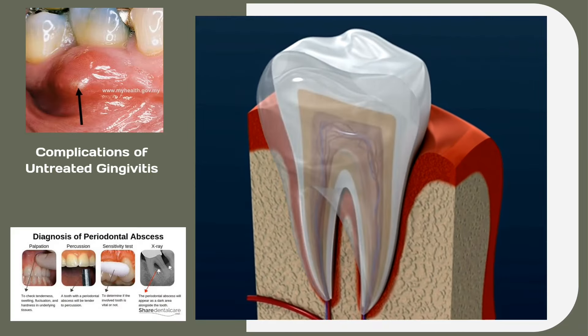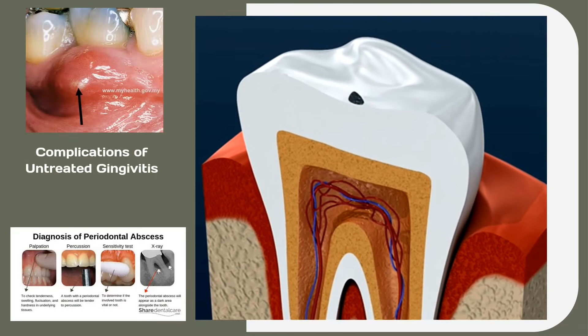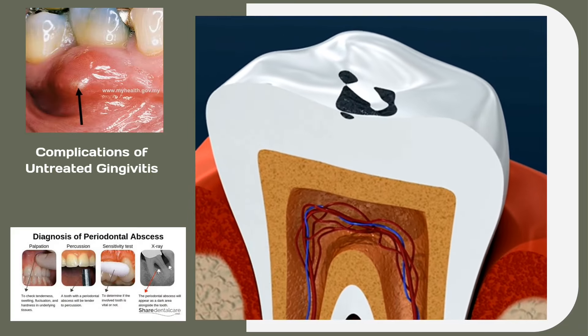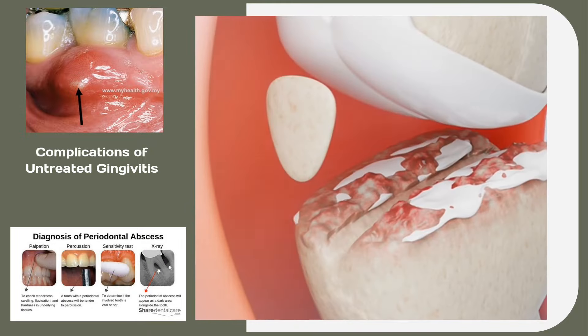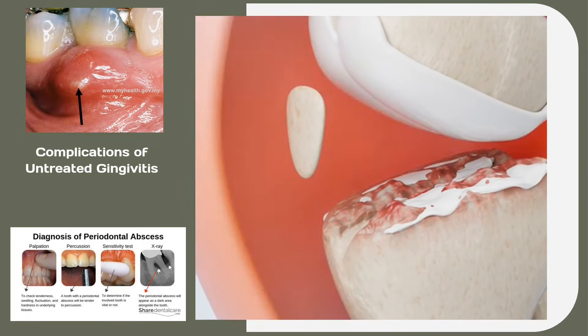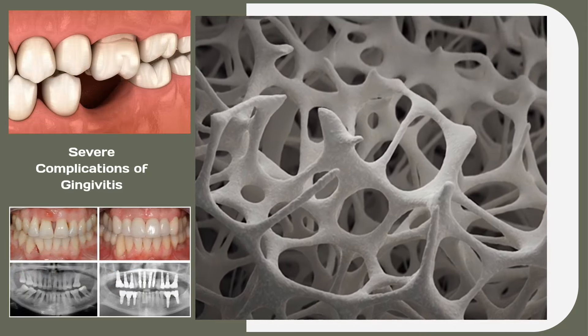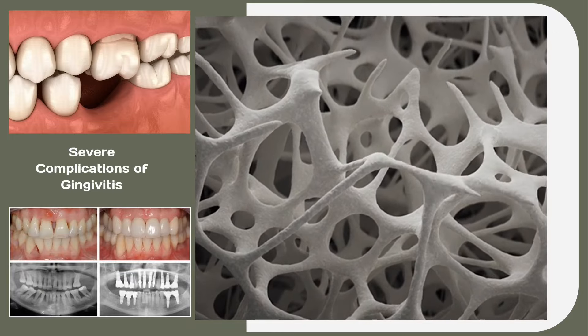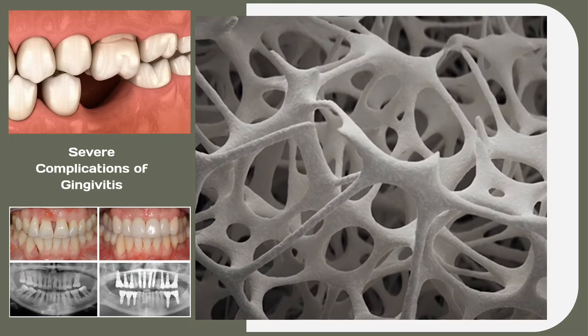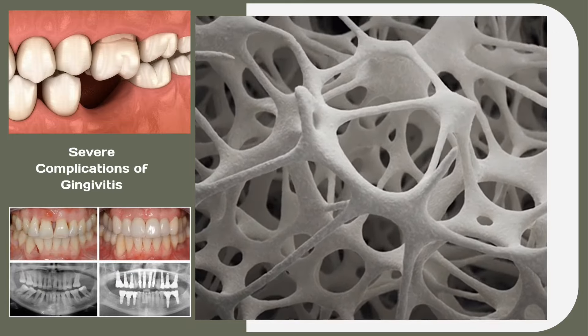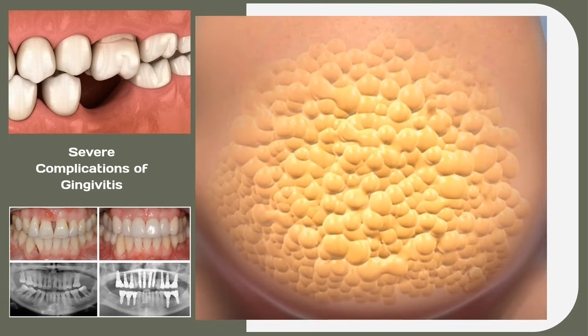Gingivitis, a common gum disease, can lead to several complications if left untreated. Some of these include periodontal abscesses, recurrence, and damage to the periodontal ligament, the tissue that connects the tooth to the alveolus. Further, it can cause damage and loss of the alveolar bone, the jawbone that contains dental cavities, leading to receding gums, loose teeth, and even loss of teeth.